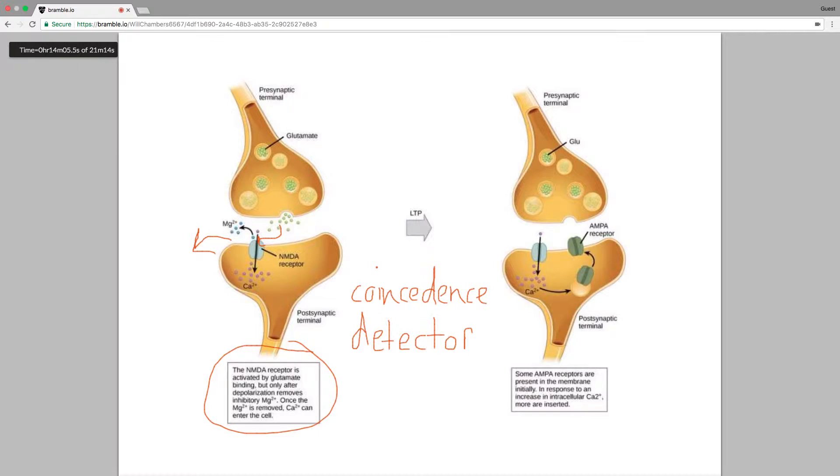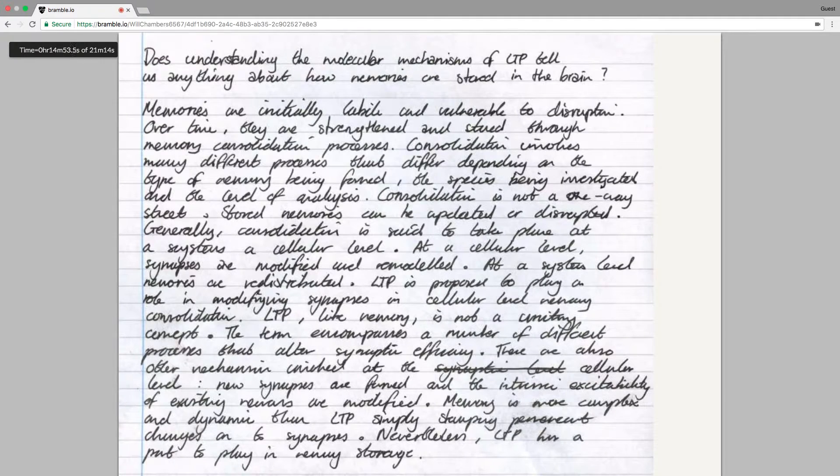That then triggers over here increased production and trafficking of AMPA receptors to the cell surface, and these are a kind of simpler type of receptor that are just kind of always on. So as soon as glutamate's bound, then they'll let ions flow through. So that is in its simplest terms how LTP works. And if you have more receptors here, then when the next potential comes down here and all the glutamate's released, then it's got more AMPA receptors to bind to, so the influx is greater and you see that increase results. So that's the molecular mechanisms. I think to return to the essay here, I think the important thing this question is getting at is does understanding the molecular mechanisms tell us anything about how memories are stored?